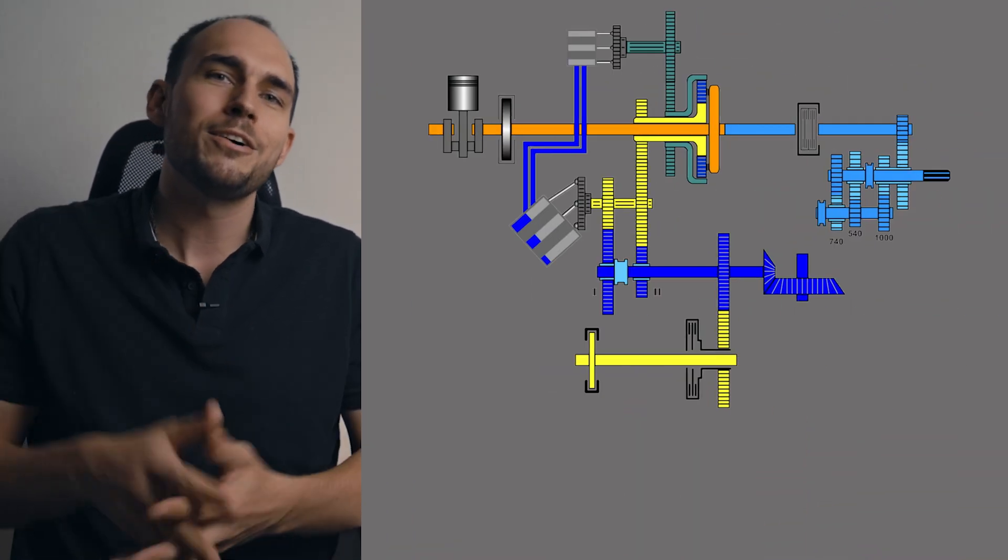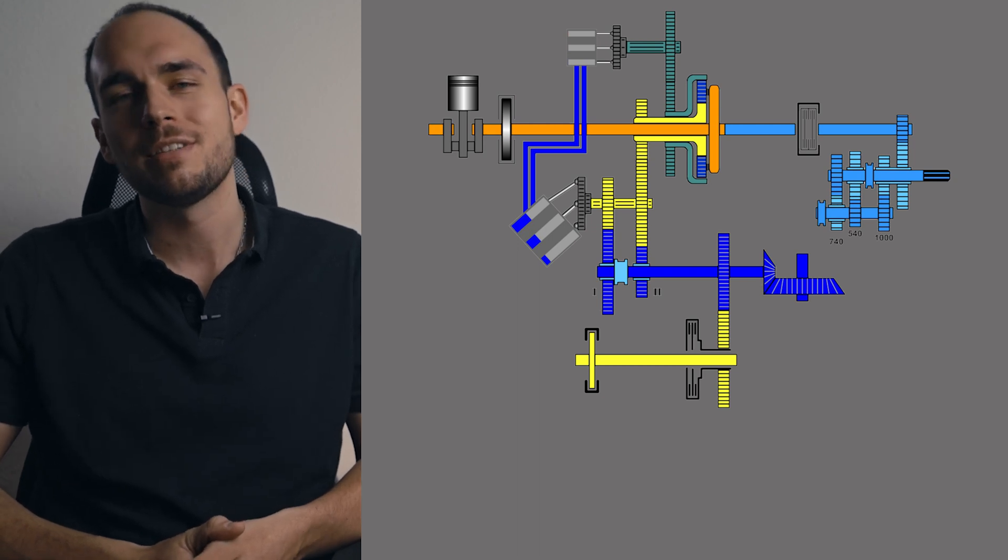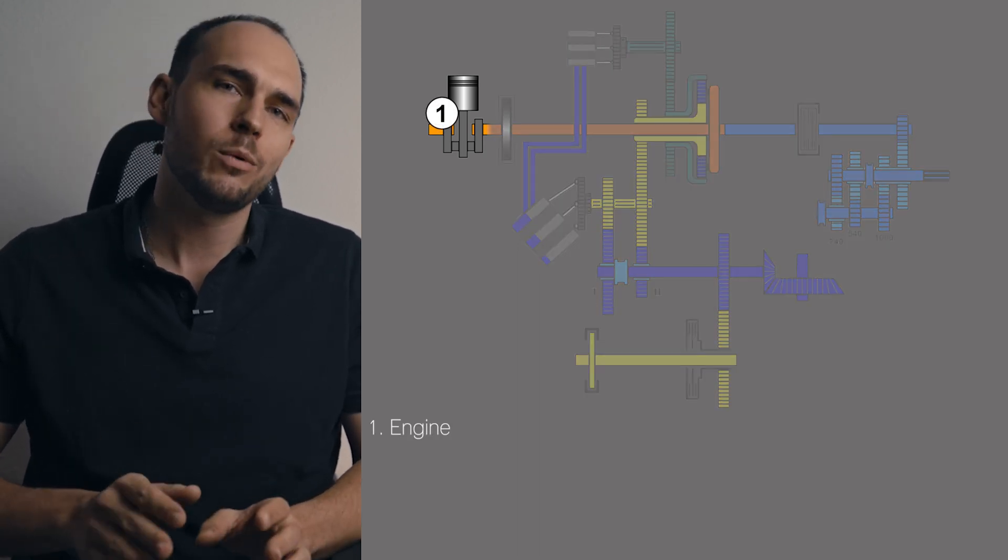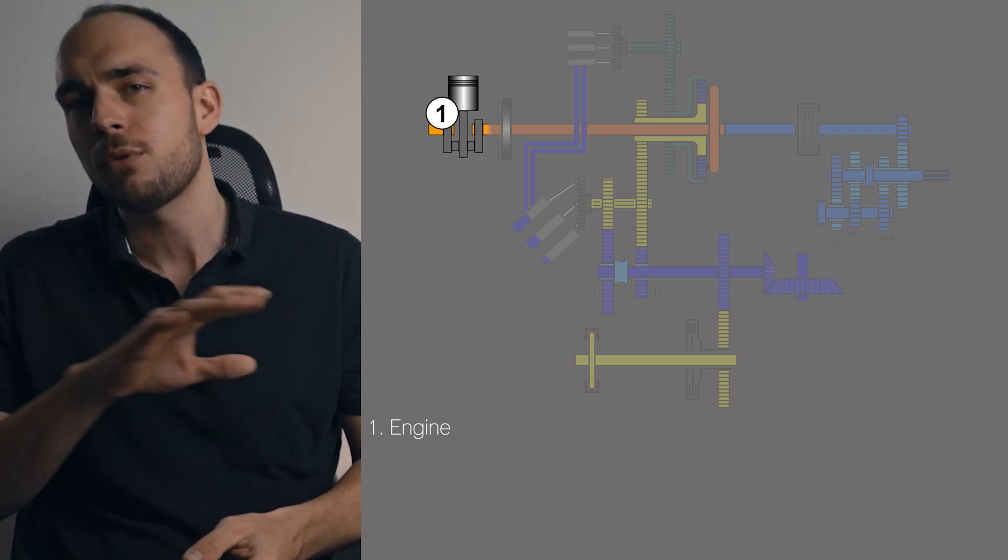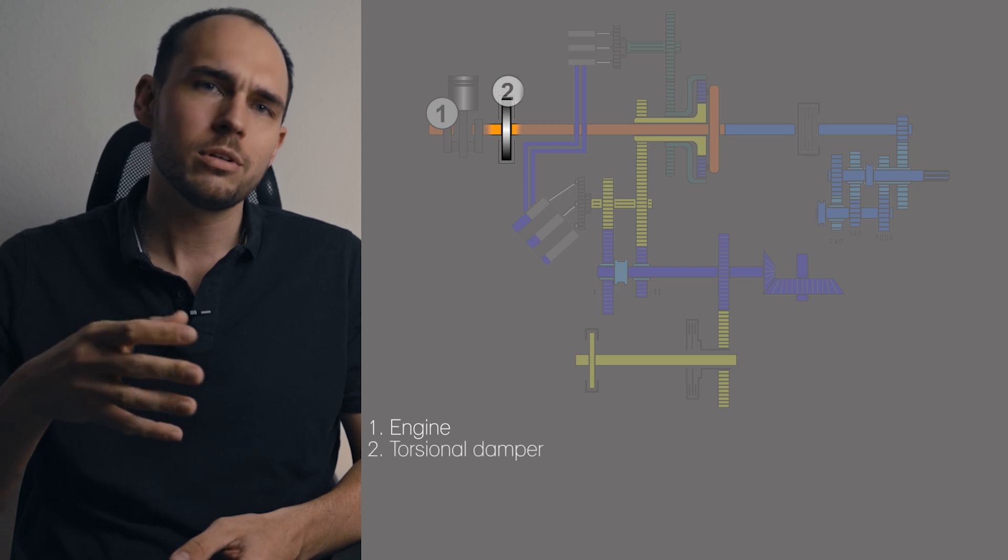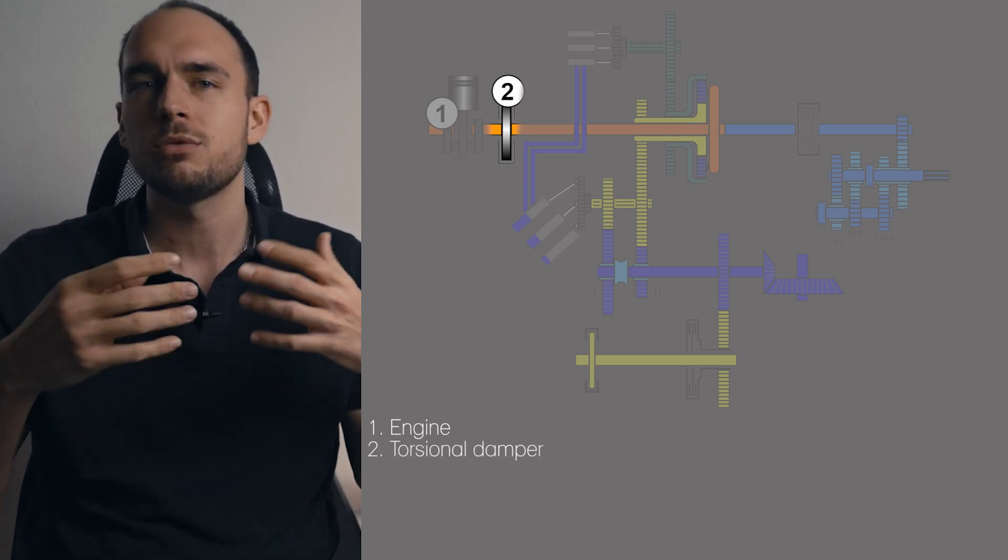Don't be scared, it looks a bit wild at first glance but we'll go through all the components step by step. At the top left we see a cylinder which symbolizes the engine. So this is where the energy comes from that drives everything else. In addition to the motor there is also a torsional damper which, to put it simply, compensates for load peaks.